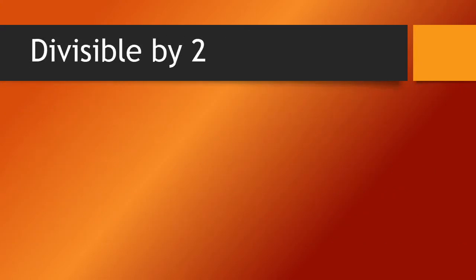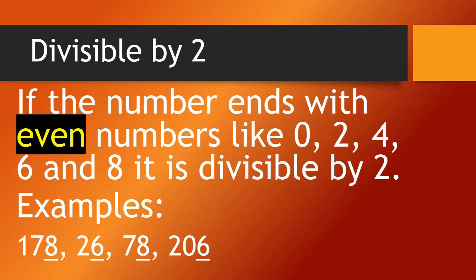Let's start with the numbers divisible by 2. If the number ends with even numbers like 0, 2, 4, 6, and 8, it is divisible by 2. Examples: 178, 26, 78, 206.